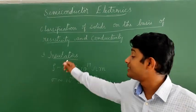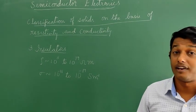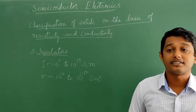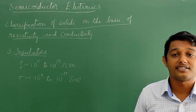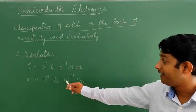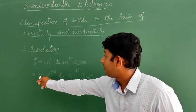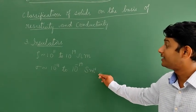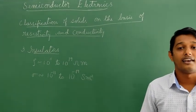Insulators have practically no free electrons and do not allow electric current to pass through them. They have very high resistivity around 10¹¹ to 10¹⁹ ohm-metre and low conductivity around 10⁻¹¹ to 10⁻¹⁹ siemen-metre inverse. Examples are glass, rubber, etc.